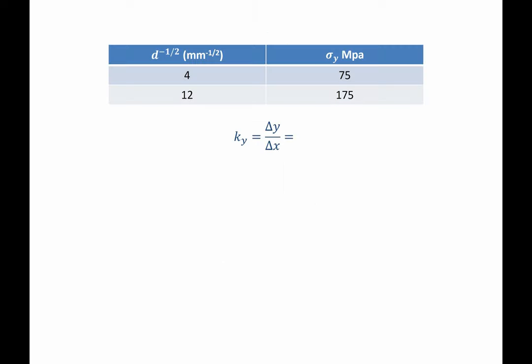Taking these points, we simply need to do the change in the vertical over the change in horizontal. In other words, 175 minus 75 divided by 12 minus 4. Punching in values, we find that k-sub-y is equal to 12.5 megapascals multiplied by millimeters to the one-half value.